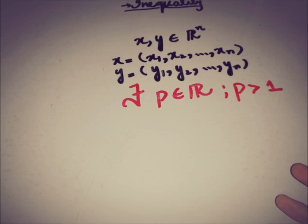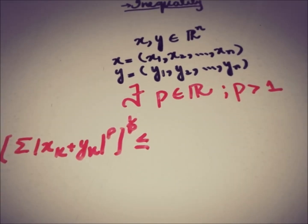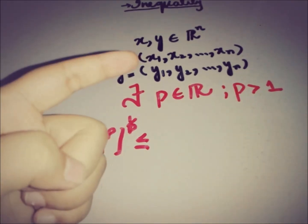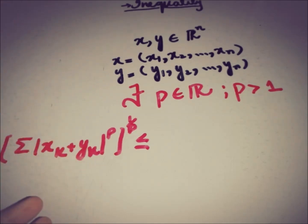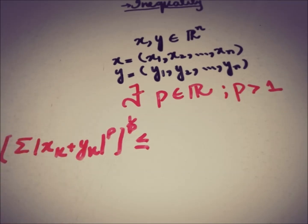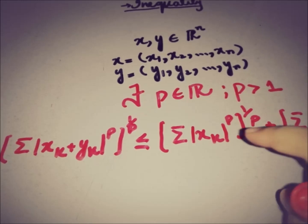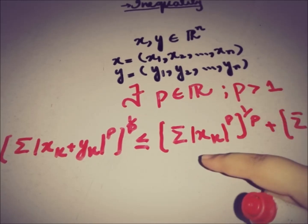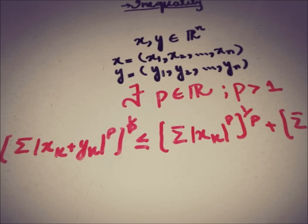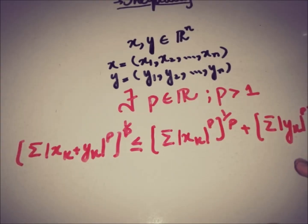So the Minkowski inequality states that the sum of |xk + yk|, where k goes from 1 to n, raised to the power P, whole to the power 1/P, is less than or equal to the sum of |xk|^P whole to the power 1/P, plus the sum of |yk|^P whole to the power 1/P.